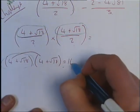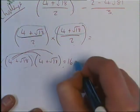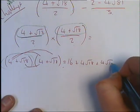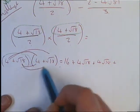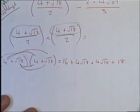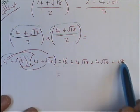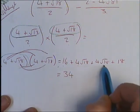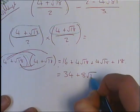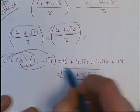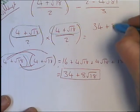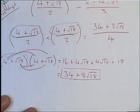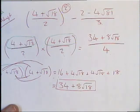So 4 times 4 is 16. 4 times root 18 is 4 root 18. Root 18 times 4 again is 4 root 18 again. And then root 18 times root 18 is just 18. If we simplify that down, we can do 16 plus 18, which will give us 34. 4 root 18s plus another 4 root 18s is going to give us 8 root 18. This forms the top part of our fraction. So we've got 34 plus 8 root 18 all over 2 times 2 is 4. That has dealt with our indice there, our squared.